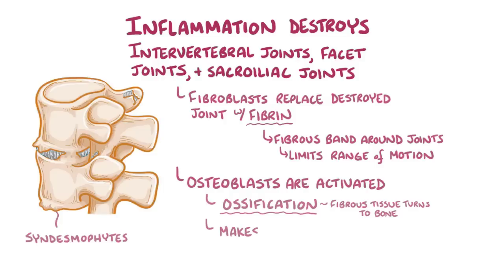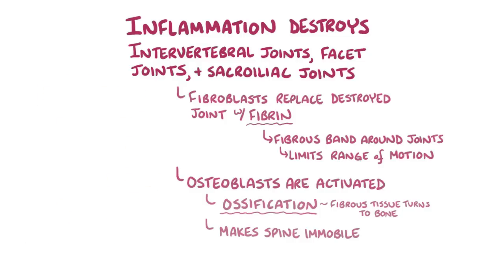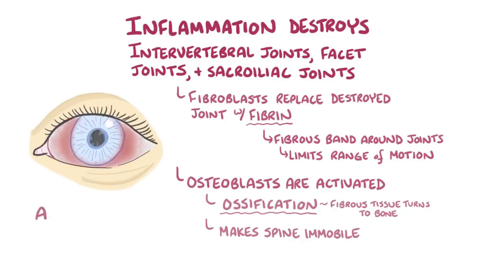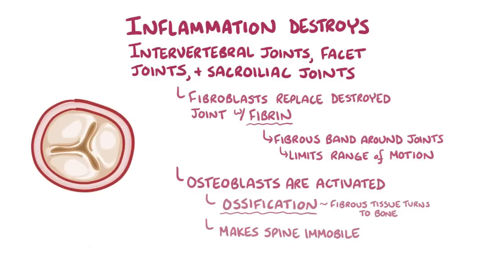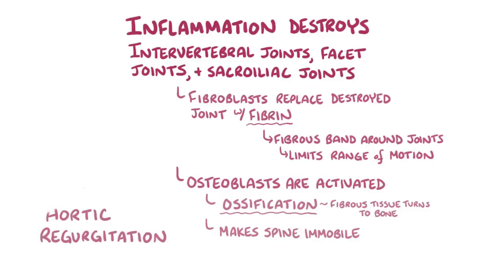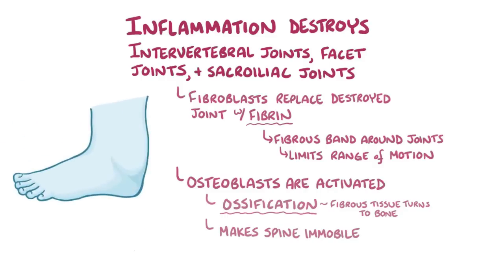This makes the part of the spine that's affected immobile, and sometimes that can be the entire spine. Other parts of the body can be affected too, like the eye, which can cause anterior uveitis. The aortic valve can also sometimes get inflamed and damaged, leading to aortic regurgitation. There can also be inflammation of tendons, like the Achilles tendon, called enthesitis.